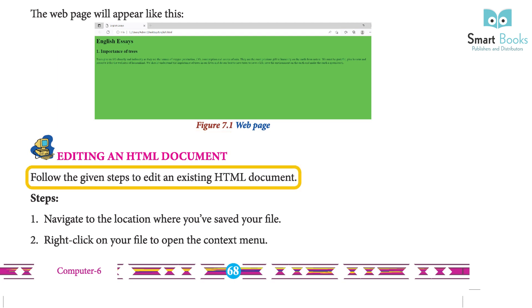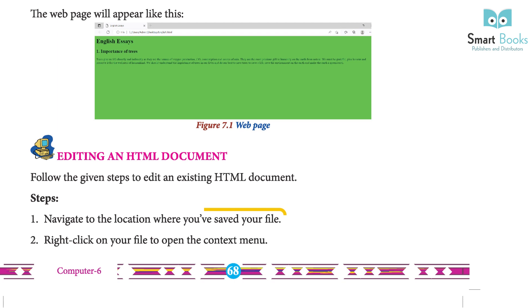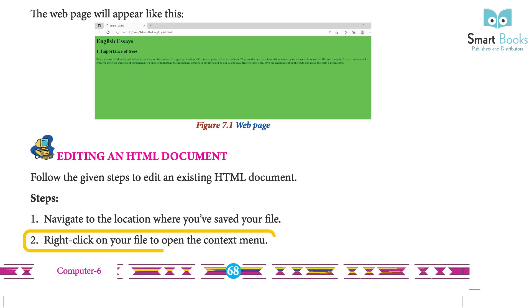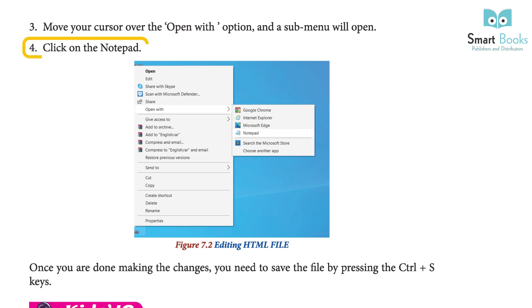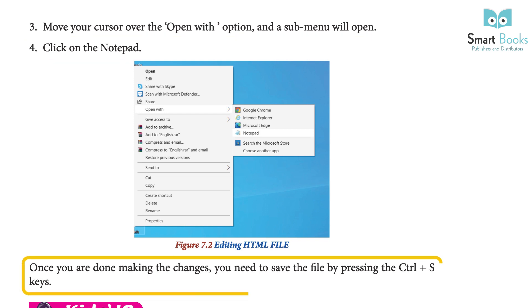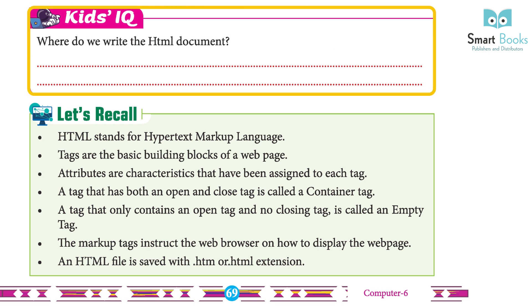Editing an HTML document: Follow these steps to edit an existing HTML document: 1. Navigate to the location where you have saved your file. 2. Right-click on your file to open the context menu. 3. Move your cursor over the 'Open with' option and a sub-menu will open. 4. Click on Notepad. Once you are done making changes, save the file by pressing Ctrl+S keys.